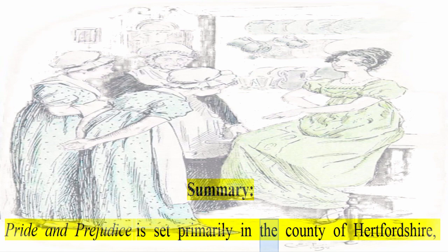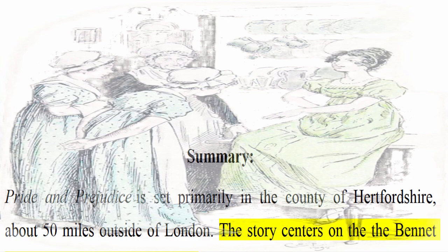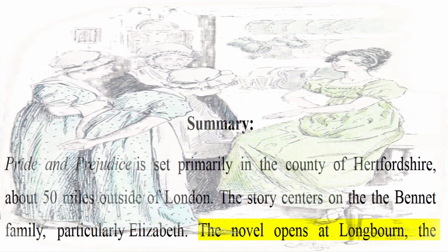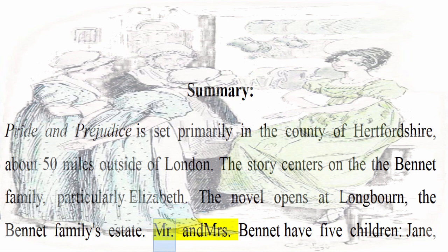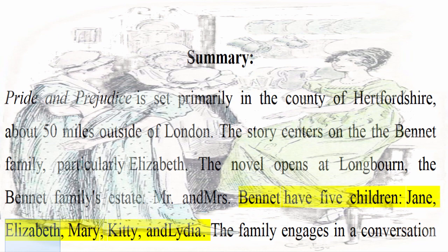Summary. Pride and Prejudice is set primarily in the county of Hertfordshire, about 50 miles outside of London. The story centers on the Bennet family, particularly Elizabeth. The novel opens at Longbourn, the Bennet family's estate. Mr. and Mrs. Bennet have five children: Jane, Elizabeth, Mary, Kitty, and Lydia. The family engages in a conversation about Mr. Bingley, a single man of large fortune who will be renting the nearby estate of Netherfield Park.